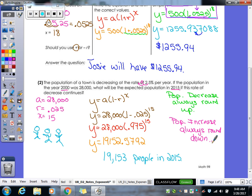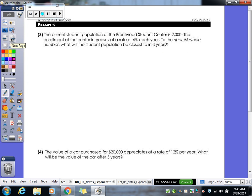Let's take a look at our two on the back. So we have the current student population of the Brentwood Student Center's 2,000. The enrollment at the center increases at a rate of 4% each year. To the nearest whole number, what will the student population be closest to in three years?